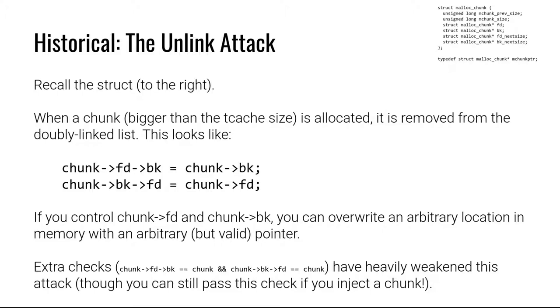Recall that each the doubly linked list has forward and backwards pointers. And when you are removing a chunk from a doubly linked list, for example from a large bin, you will look at the chunk forward of the previous chunk, and you will set its back address to the chunk behind your chunk.